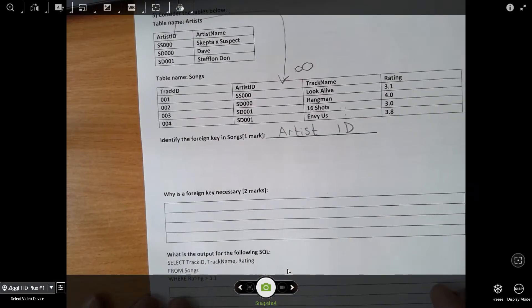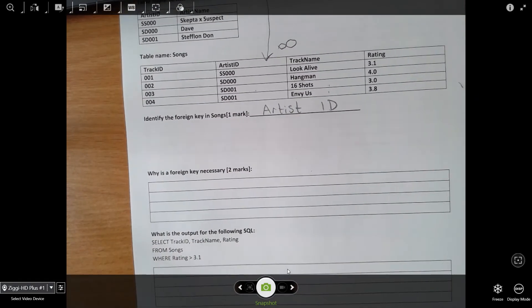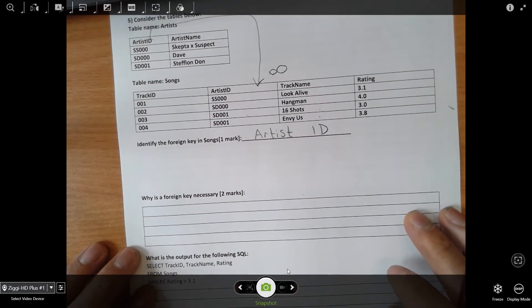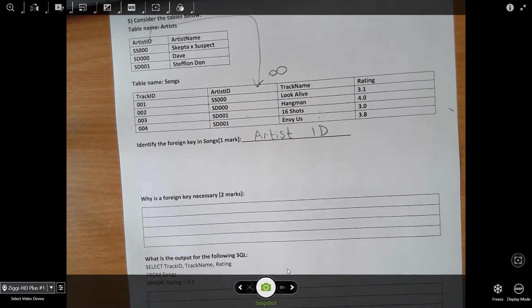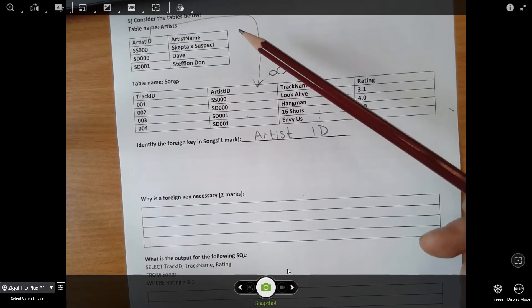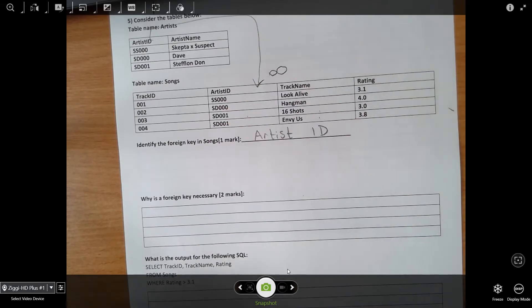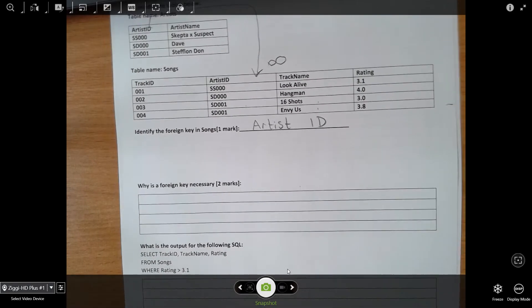Why is a foreign key necessary? The foreign key is necessary because it creates a relationship, a one-to-many relationship between the artist table and the songs table. And the second mark is for saying that this reduces redundancy and ensures that any changes made to one table are automatically updated in the others.